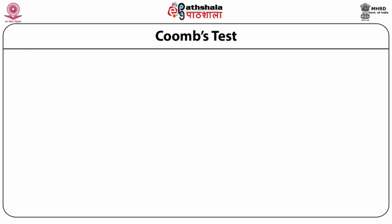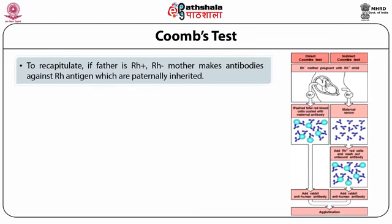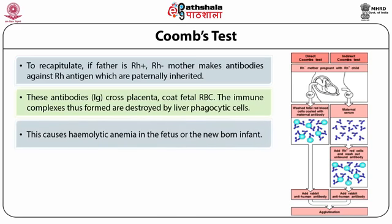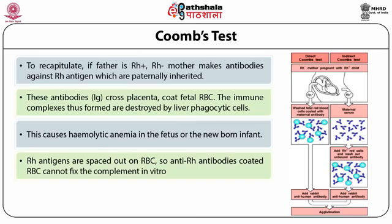Robin Coombs was the first to raise Ig antibodies; this test which uses such Ig to detect antibodies causing erythroblastosis fetalis was named after him. To recapitulate: the father is Rh positive, the Rh negative mother makes antibodies against Rh antigen which are paternally inherited. These antibodies cross the placenta, coat fetal RBCs, and the immune complexes thus formed are destroyed by phagocytic cells, causing hemolytic anemia in the fetus or the newborn infant. Rh antigens are spaced out on RBC, so anti-Rh antibodies coated RBCs cannot fix complement in vitro.